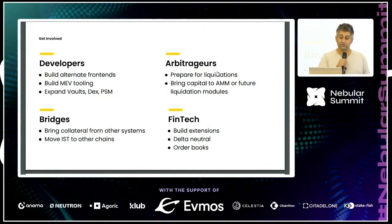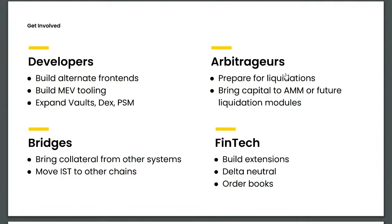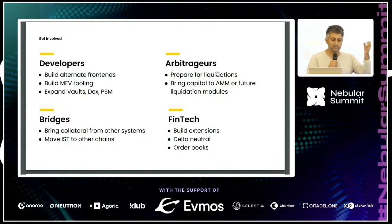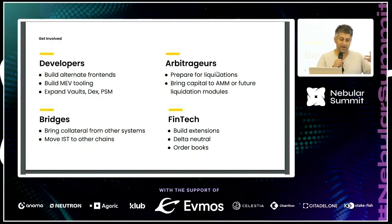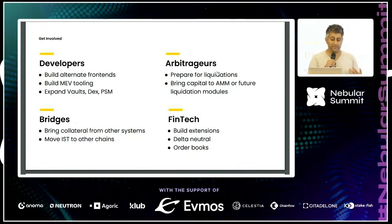How do you get involved? We're looking for alternate front ends, and there are some technical milestones before that's really possible. MEV is going to play a strong role — the naive Cosmos mempool is not going to be sufficient. When ATOM prices drop 30%, you have people racing to add collateral to vaults, pay down IST debt, and arbitrage liquidations. We need next-generation mempool solutions, and the work that teams like Mekatek and Skip are doing will be incredibly valuable.